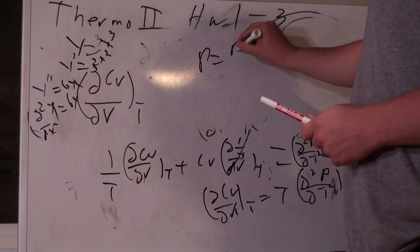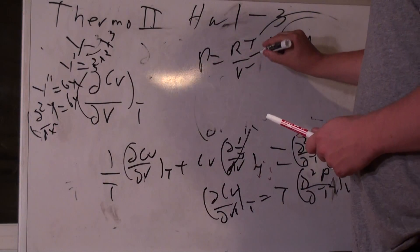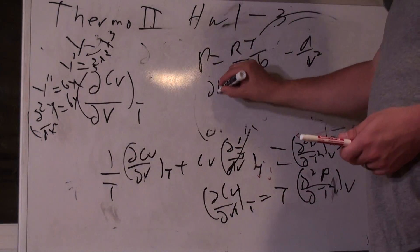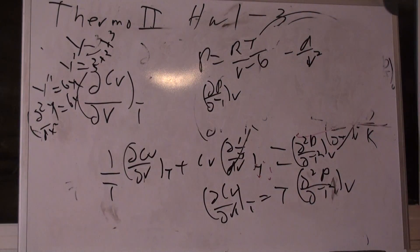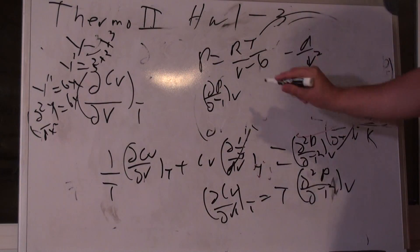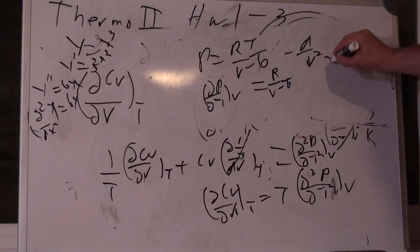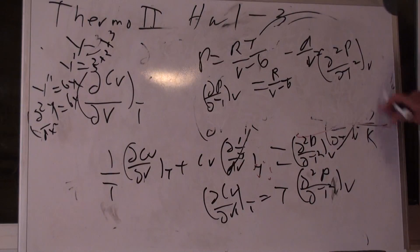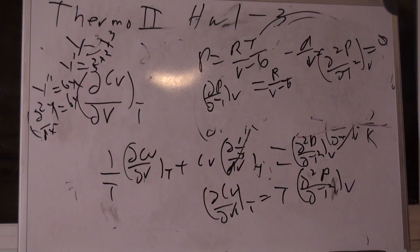So, we got P is equal to RT over V minus B minus A over V squared. There. dP/dT. That constant V. Well, A is constant. B is constant. V is constant. V is constant. R is constant. So, the derivative is R over V minus B. Take the second derivative. Well, what I'm saying derivative is. Well, that's equal to zero.